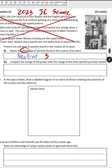Compare the charge of the proton with the charge of the other particle you have named. P for positive - protons have a positive charge. N for none - neutrons have no charge. If you mention both of these points, you get three marks.